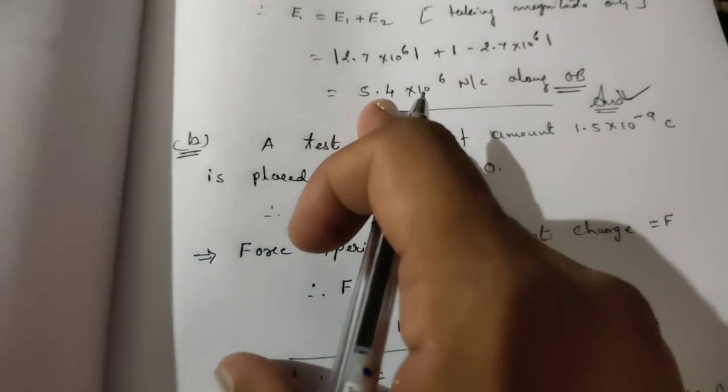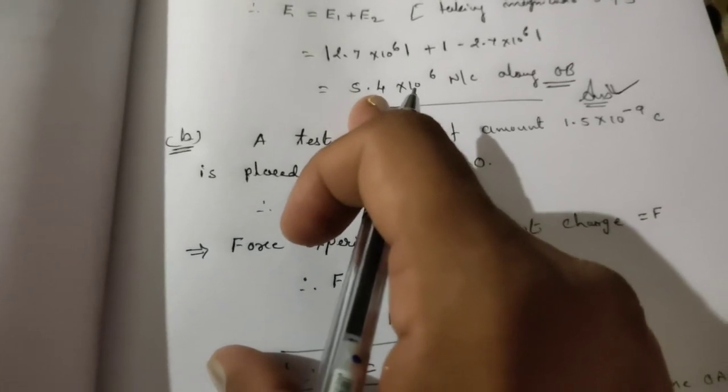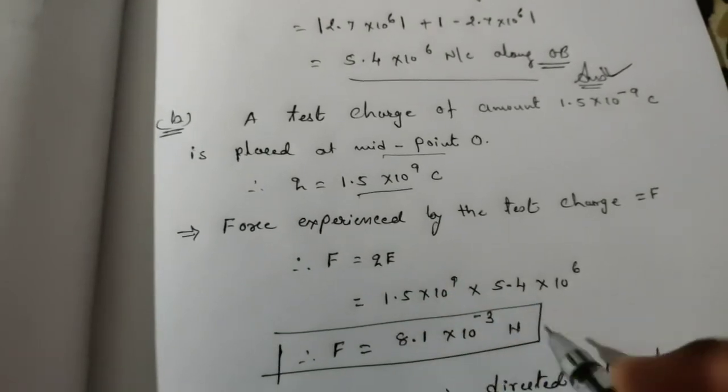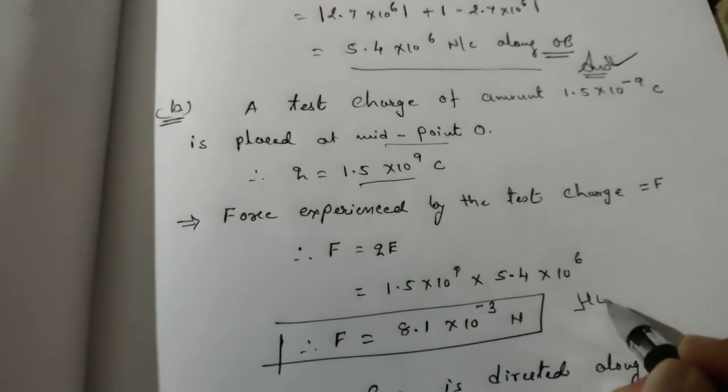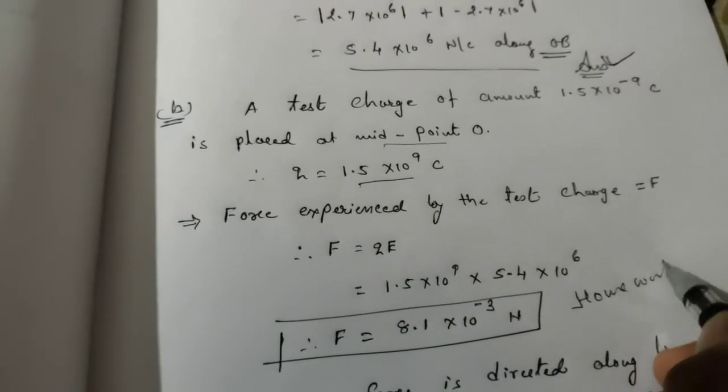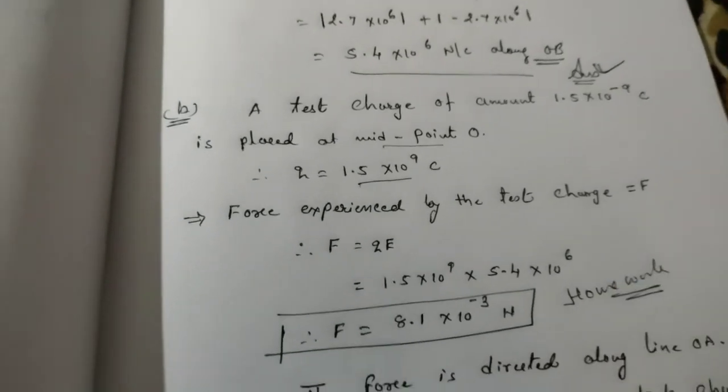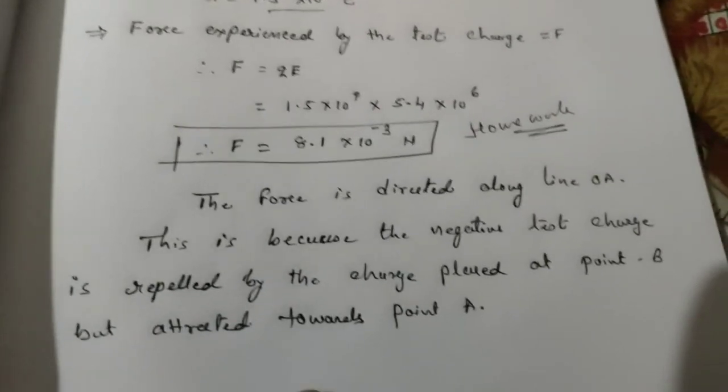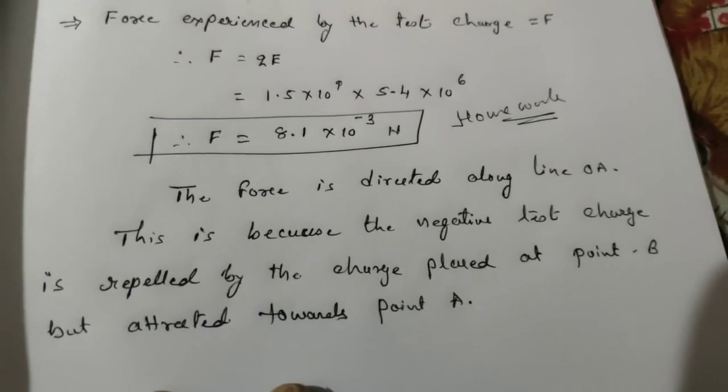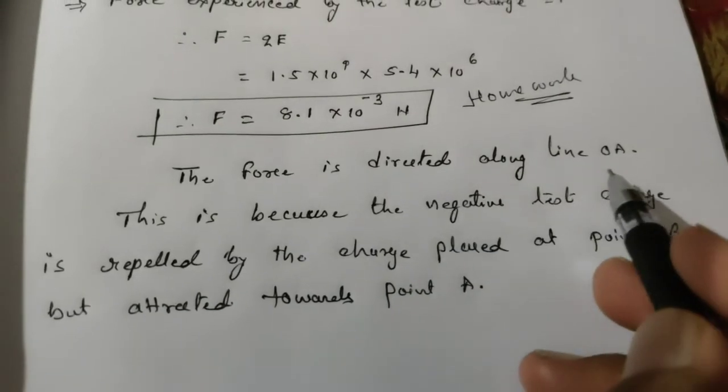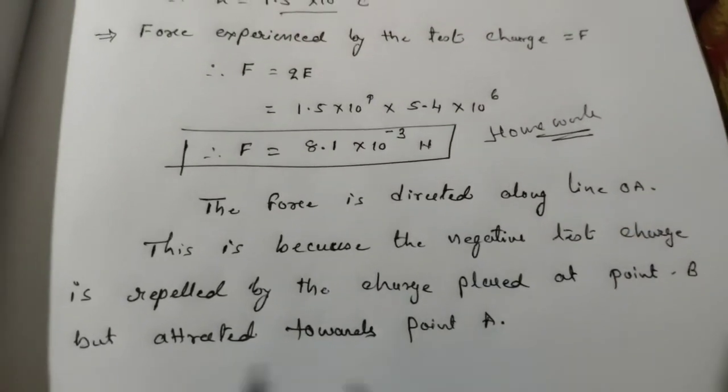You will get the final answer 8.1 × 10⁻³ Newton. Now, force is a vector quantity so you must indicate direction. The force is directed along line OA as per the direction of electric field.